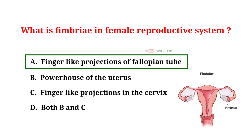Fimbriae are finger-like structures in the female reproductive system near the ovaries. They help capture released eggs during ovulation. When an egg is released from an ovary, fimbriae gently sweep it into the fallopian tube. From there, the egg can meet the sperm for fertilization to occur. Fimbriae play a crucial role in the journey of eggs for potential pregnancy.